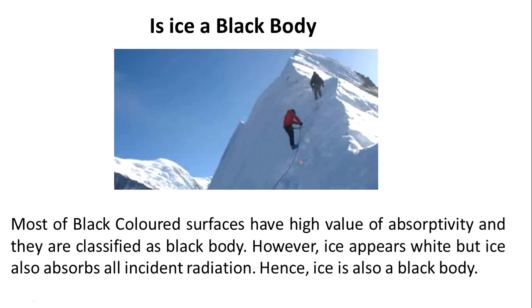Most black-colored surfaces have a high value of absorptivity and are classified as black bodies. However, ice appears white but also absorbs all kinds of radiation, hence it is called a black body.